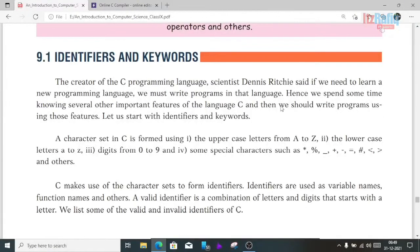Today we are going to discuss identifiers and keywords. The creator of the C programming language, scientist Dennis Ritchie, said if we need to learn a new programming language we must write programs in that language. Hence, we should spend some time knowing several important features of C, then we should write programs using these features. Let us start with identifiers and keywords.